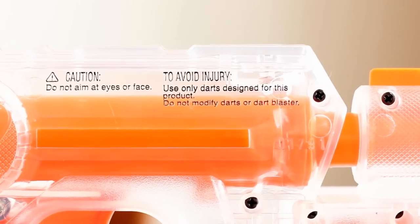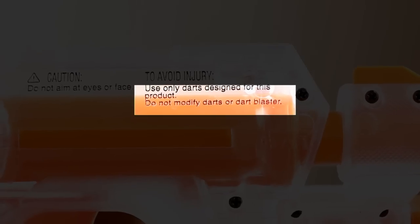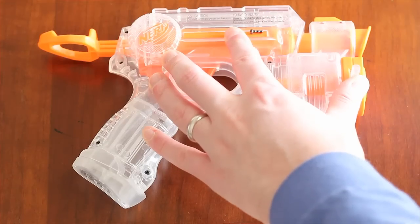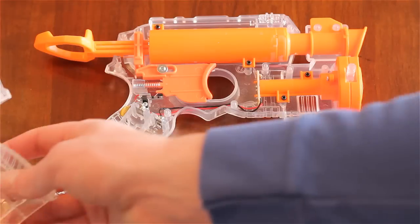On this clear gun you might notice the easy-to-read warning that we're going to ignore. First, unscrew all the screws, then remove the cover to get to the guts.